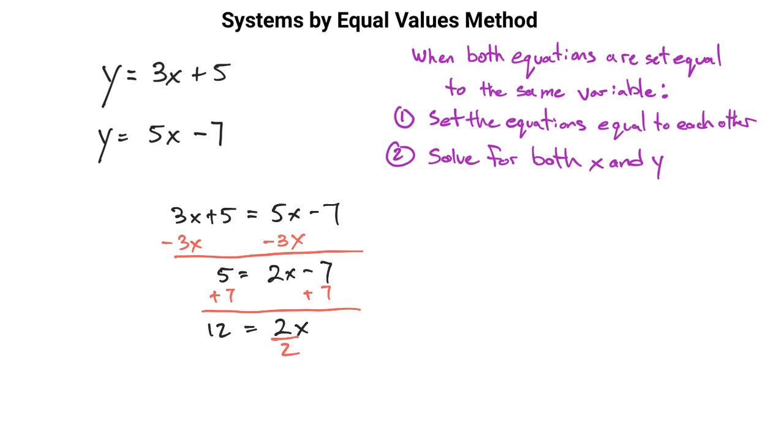We finish by dividing both sides by 2, which gives us x equals 6. That's step 1.